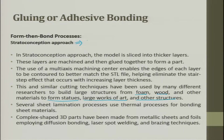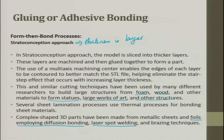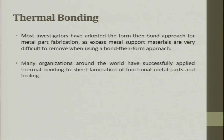These and similar cutting techniques have been used by many different researchers to build large structures from foam, wood, and other materials to form statues, large works of art, and other structures. The biggest advantage is that thickness is larger, so plywoods can also be used. Several sheet lamination processes use thermal processes for bonding. Complex 3D parts have been made from metallic sheets and foils employing diffusion bonding, laser spot welding, and brazing. Most investigators have adopted the form-then-bond approach for metal part fabrication, as excess metal support material is very difficult to remove when using bond-then-form.